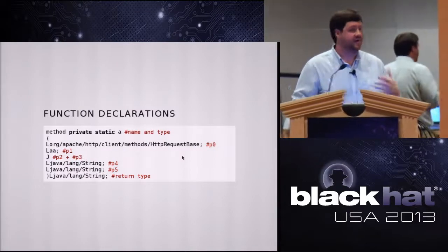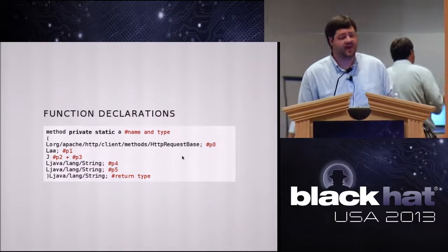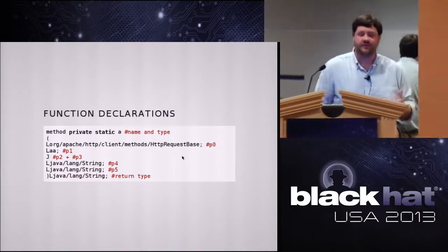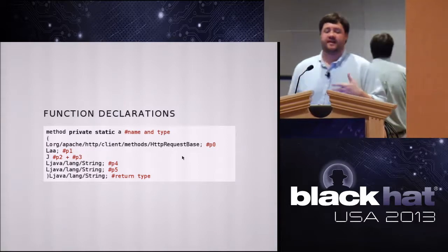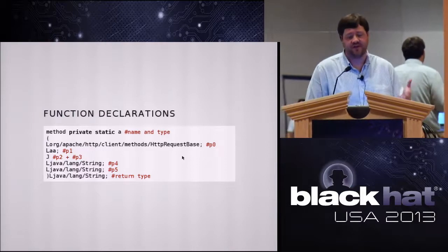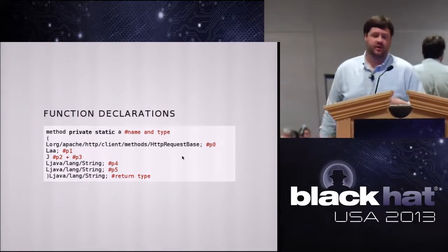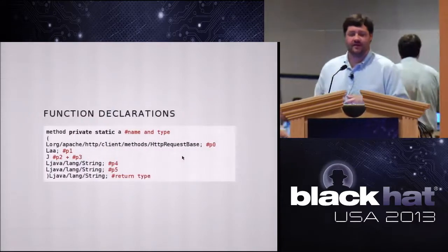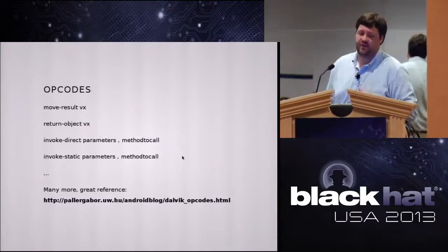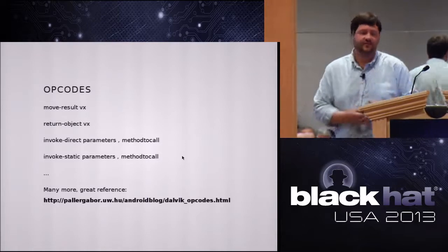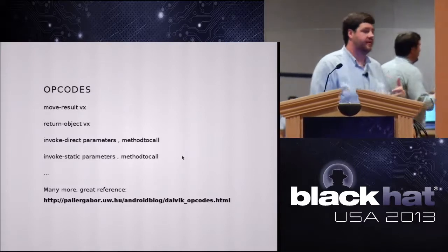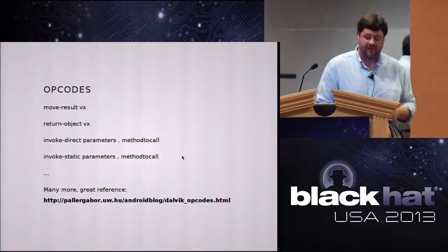Here's a function declaration to look at to get your feet wet. Defining a method — private, static, named A. You can see it takes in six parameters: an HTTP request base, a class AA, a long, two strings, and it returns a string. Primitives available at the Smali level include void, boolean, byte, short, et cetera. Your L-types are your higher-level Java objects, which are available within the assembly and make use of that very interesting because we know what these objects are defined as. Opcodes are similar to what you see in a lot of assembly languages: move the result of the last function to a virtual register, return object, invoke for calling methods.